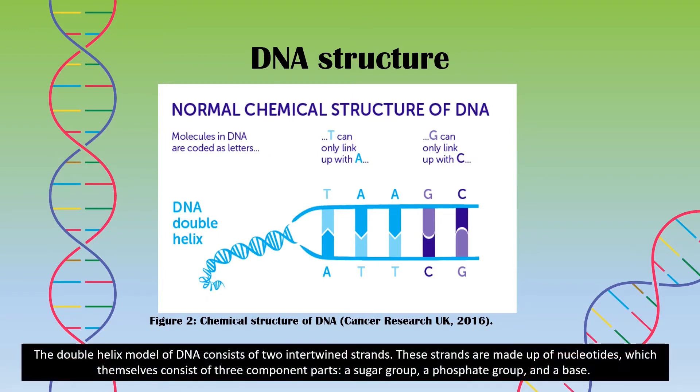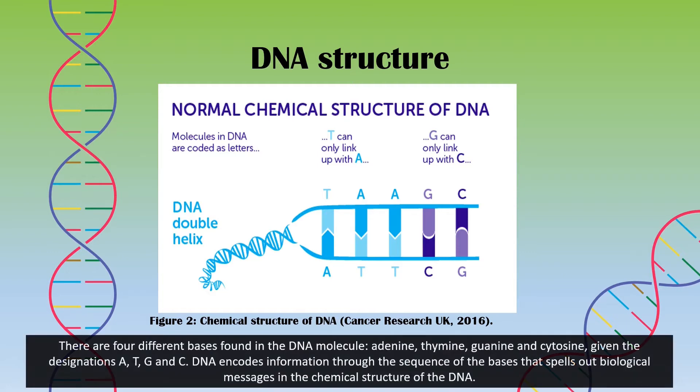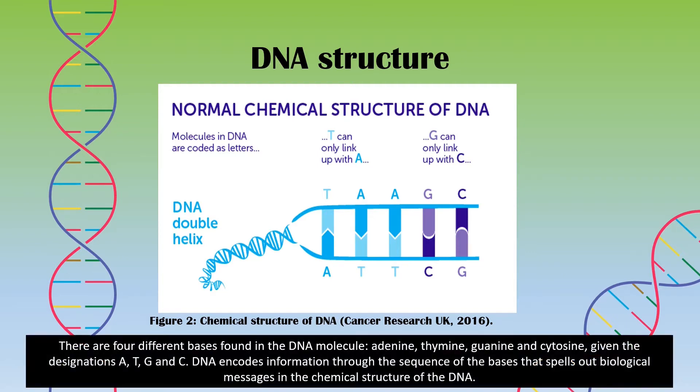The double helix model of DNA consists of two intertwined strands. These strands are made out of nucleotides which themselves consist of three component parts: a sugar group, a phosphate group, and a base.